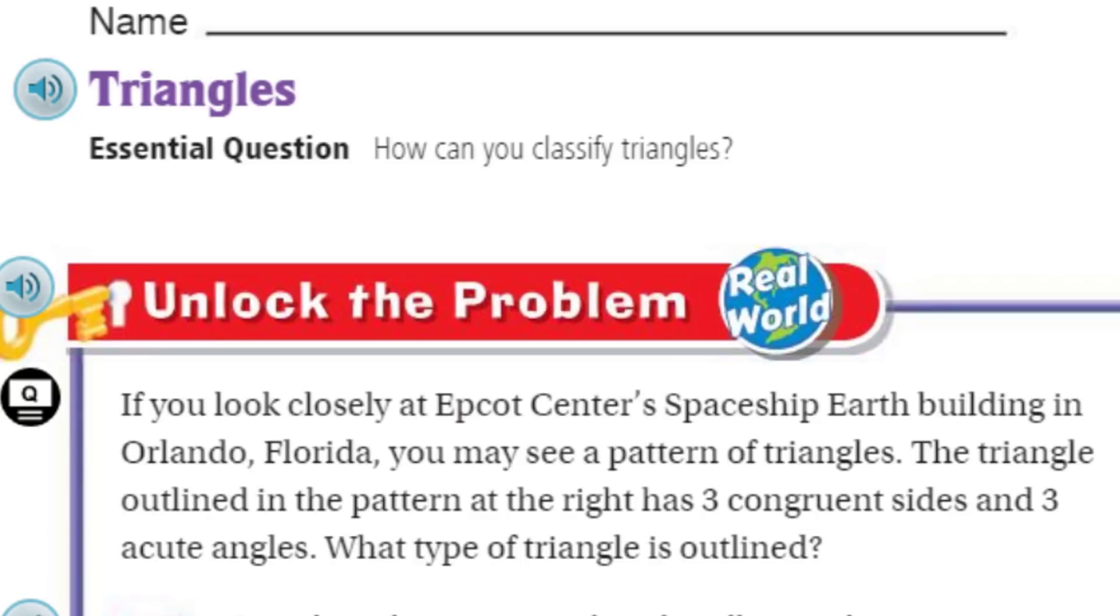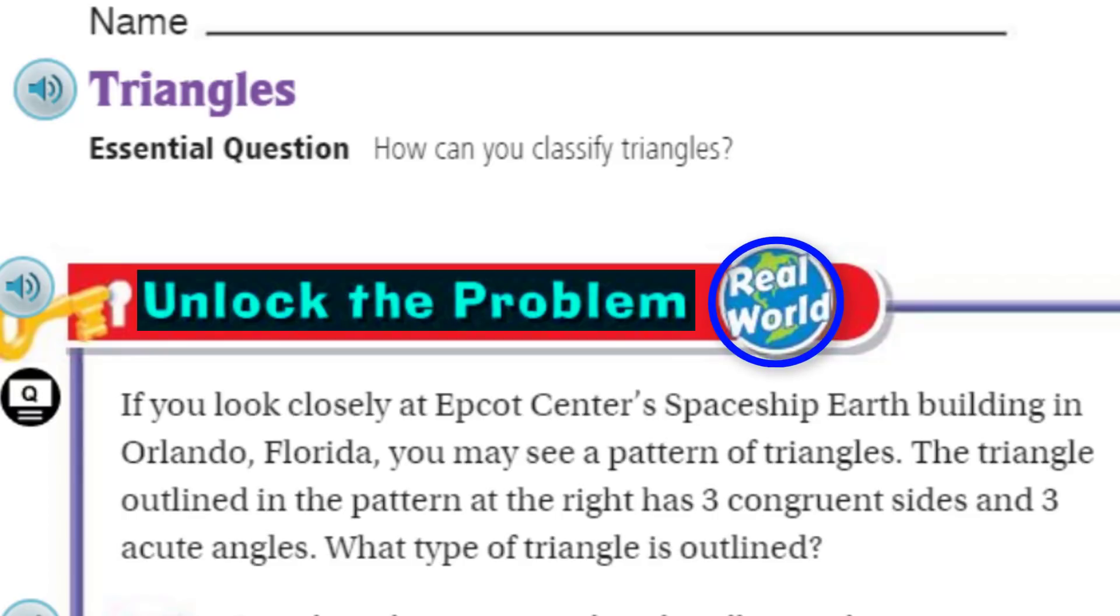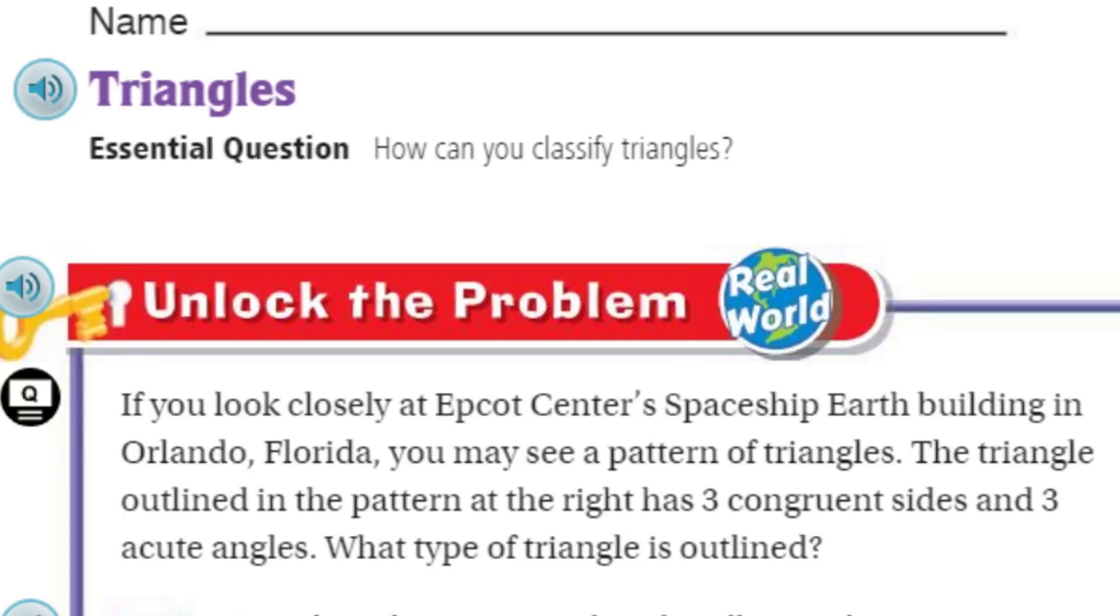But first, we can't do any of that unless we unlock the problem. That's right, my friends, because it's real world. It says if you look closely at Epcot Center's Spaceship Earth Building in Orlando, Florida, you may see a pattern of triangles. The triangle outlined in the pattern at the right has three congruent sides and three acute angles.